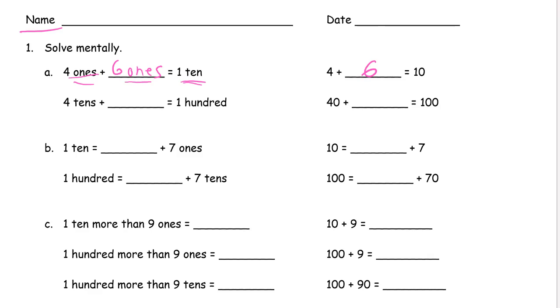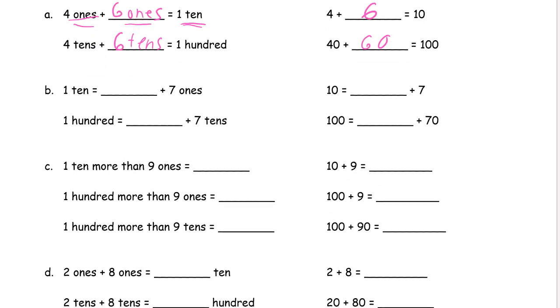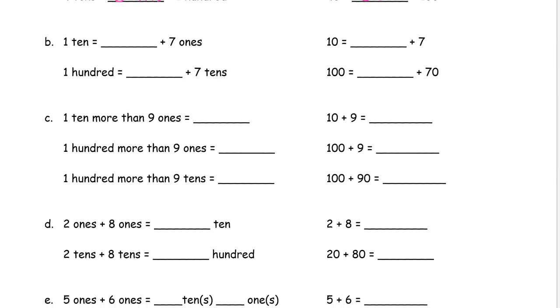So four tens plus six tens, and now you see why you had to write in the ones. That's 40 plus 60. And one ten is seven ones plus three ones, which is ten equals three plus seven. And we can do that with ones, we can do it with tens.